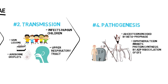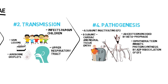Subunit B helps bind the bacteriophage to cardiac and neural tissue for cell entry. Upon entry, subunit A integrates into the bacterial chromosome and the toxin is synthesized. Corynebacterium diphtheriae cells that are not lysogenized by this bacteriophage do not produce exotoxin and are non-pathogenic.